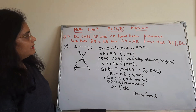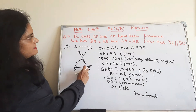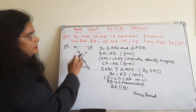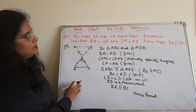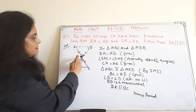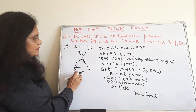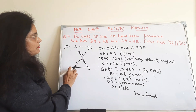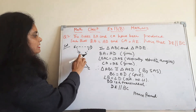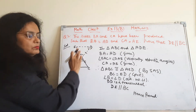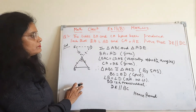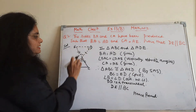In triangle ABC, BA and CA have been produced such that BA is equal to AD and CA is equal to AE. We have to prove that DE is parallel to BC. BA has been produced such that BA is equal to AD and CA is equal to AE, and we have to prove that ED is parallel to BC.